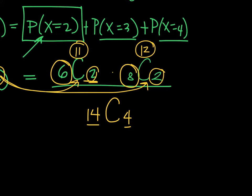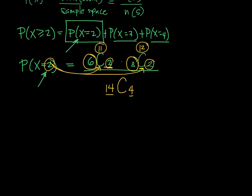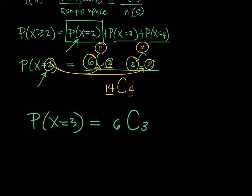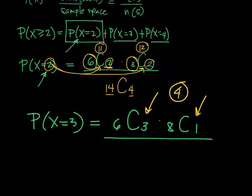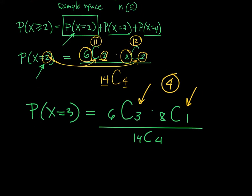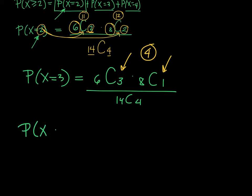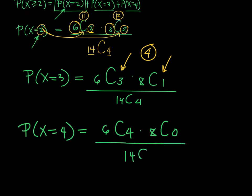For P(x=3): take 3 from the 6 grade 11 students (6C3), and 1 from the 8 grade 12 students (8C1) to complete the 4-member team, all over 14C4. For P(x=4): all 4 members are grade 11, so take 4 from 6 (6C4) and 0 from grade 12 (8C0), over 14C4.